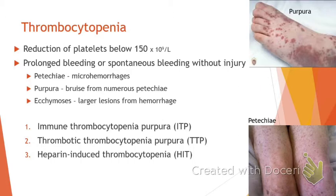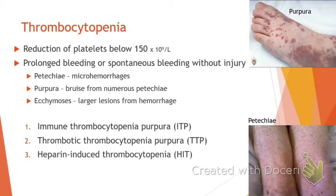Without platelets as your first-line plug, you'll have tons of little spots of random spontaneous bleeding - petechiae. Purpura is where you have numerous petechiae coming together. Ecchymosis are large bruises. Petechiae are pinpoint bleeds; purpura are multiple pinpoints coming together into larger circles; and ecchymosis are our larger bruises. They're all basically signs of bleeding. There are three main thrombocytopenias, plus a big one called disseminated intravascular coagulation.